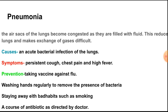Pneumonia is caused by acute bacterial infection of the lungs. Main symptoms are persistent cough, chest pain, and high fever. Prevention: prolonged suffering from the flu often leads to pneumonia, so taking the vaccine against flu helps in preventing this disease as well.